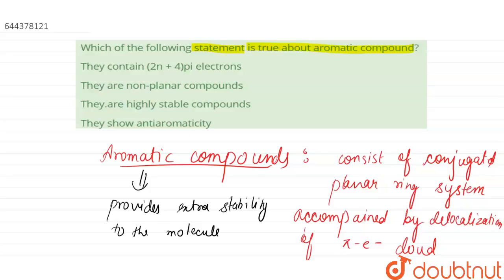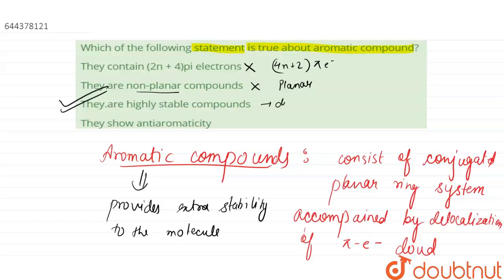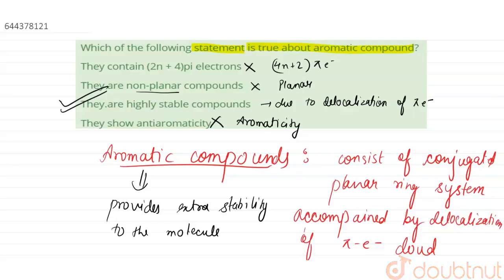Now let us look at the options. Option one: they contain two n plus four pi electrons — no, they contain four n plus two pi electrons, so this is wrong. Option two: they are non-planar compounds — no, they are planar, so this is wrong. Option three: they are highly stable compounds — yes, aromatic compounds are highly stable due to delocalization of pi electrons and aromaticity. So the correct statement is that they are highly stable compounds.